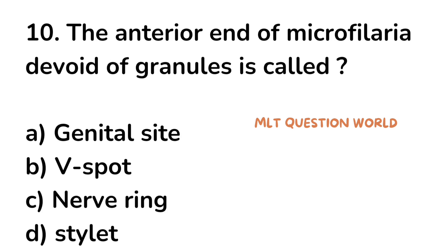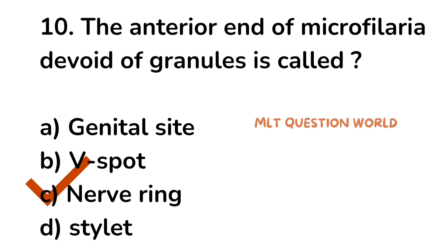Question number 10. The anterior end of microfilaria area devoid of granules is called: option A. Genital site, option B. V-spot, option C. Nerve ring, option D. Stilet. The right answer is option C, Nerve ring.